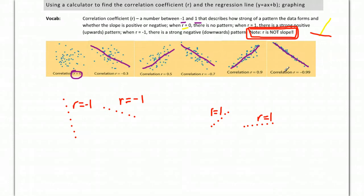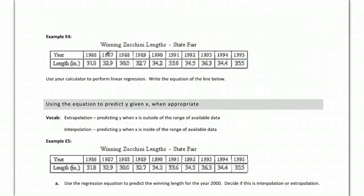And then 0.99 is basically a straight line with just some little fuzziness above and below. Again, the positive number here because it's going up, negative number because it's going down. This first example here, we're going to use our calculator to actually perform linear regression.